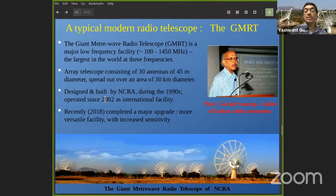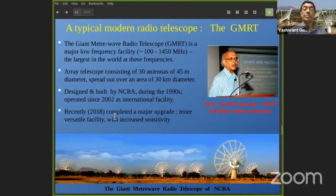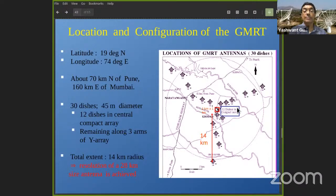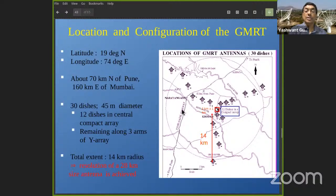Like all modern telescopes, the GMRT is an array — 30 antennas each 45 meters in diameter, spread over a 30-kilometer region. It was designed and built entirely indigenously in India during the 1990s and has been operational since 2002 as an international facility open to anyone in the world. The configuration is roughly Y-shaped, with a central concentration of 12 antennas in a one-by-one-kilometer region and the remaining 18 spread out to a largest radius of just over 14 kilometers, synthesizing a radio aperture of more than 28 kilometers in diameter.